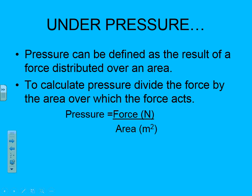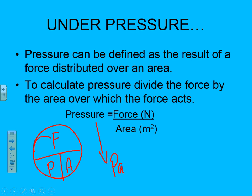Our default unit for distance and length is meters, so area is in meters squared. From chapter 12, our unit for force is newtons. Pressure equals force divided by area, and the unit for pressure is pascals, or Pa. The higher the pressure, the greater the force; the more area, the less the force. We'll talk about practical applications where pressure, force, and area are all intertwined.